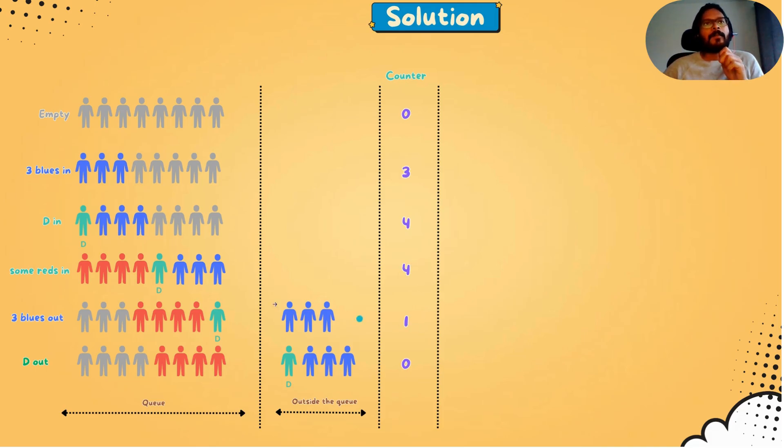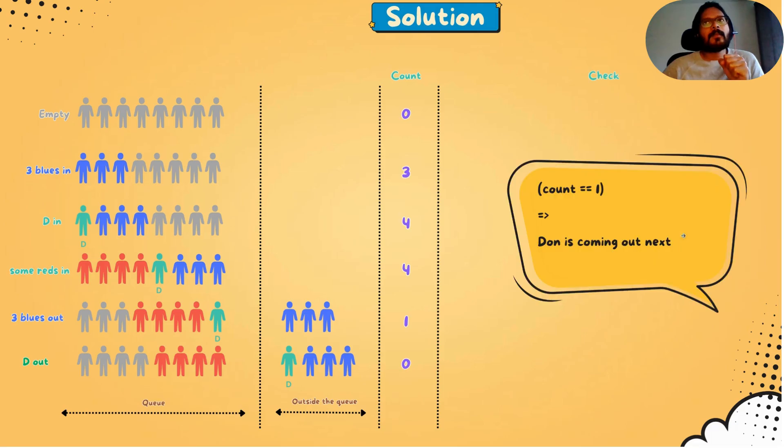Now how do we decrement? Whenever somebody comes out of the queue, it gets decremented by that many counts. I'm just skipping some cycles here. From four, three people came out, so four minus three becomes one. Now when the counter becomes one, the next person who's going to come out has to be Don. And that's my check. When the counter becomes one, in the next cycle, Don is going to come out.